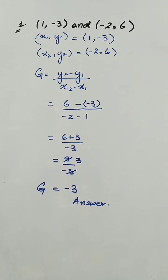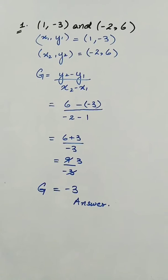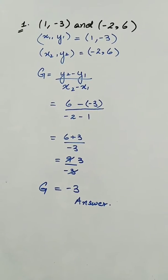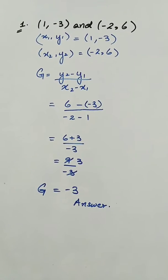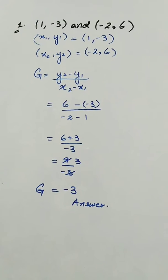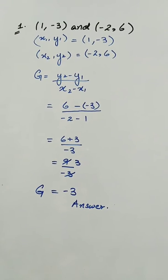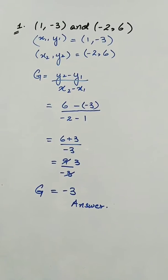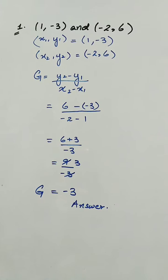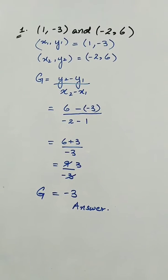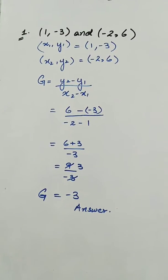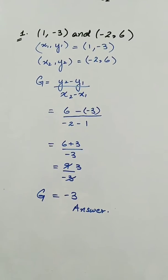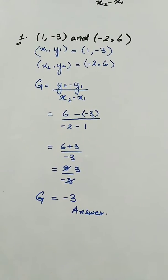So here we have -2 minus 1. Further solving, we will have 6 — since minus minus is plus — so 6 plus 3 over minus 3. So the answer is 9 over -3, which will be further reduced as -3. So the final gradient comes out as -3.